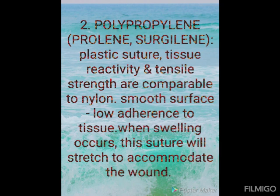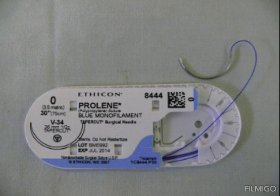Moving on to polypropylene, with examples being Prolene and Surgilene. It is a plastic suture formed by polymerization of propylene. Prolene is an extremely inert suture whose tissue reactivity and tensile strength are comparable to nylon. It has a very smooth surface with low adherence to tissue, ideal for subcuticular intradermal sutures, and slides out smoothly at suture removal. When swelling occurs, this suture will stretch to accommodate the wound, leaving it loose once swelling subsides.